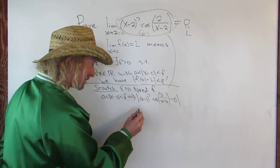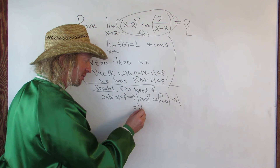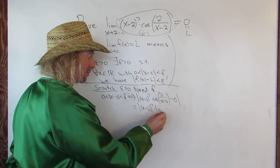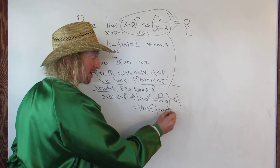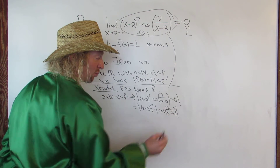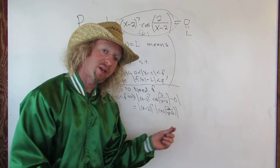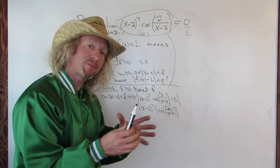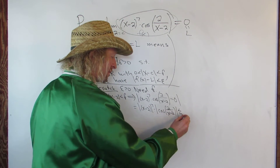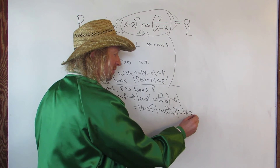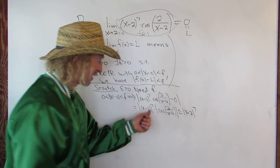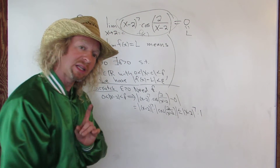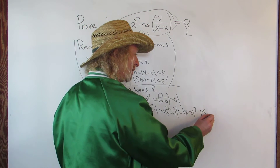We can drop the 0, so this equals the absolute value of x minus 2 to the 7th times the absolute value of cosine of 2 over x minus 2. We know that the absolute value of cosine is less than or equal to 1 — cosine is bounded by 1 — so this is less than or equal to the absolute value of x minus 2 to the 7th times 1. And we want this to be less than epsilon.